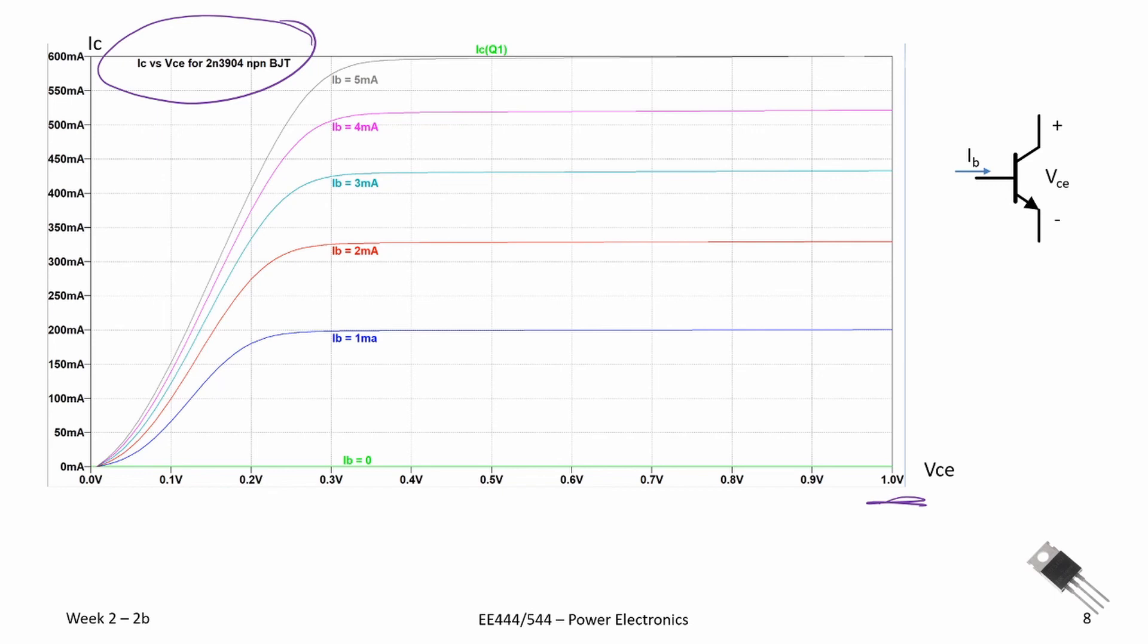but expanded in the saturation region. From our previous calculations, we were shooting for a base current of about 3 milliamps and a collector current of about 30 milliamps,